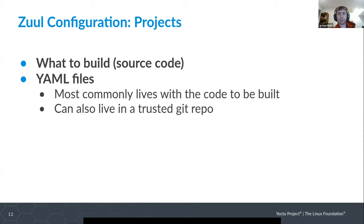The first pipeline is the check pipeline, which is intended to run basic sanity checks every time a pull request is created or updated. I currently have it actually building images for QEMU and Raspberry Pi 4, though I'll probably change this because you don't really want to be using CI resources to build every time a pull request is updated — that's really the purpose of the gate pipeline.